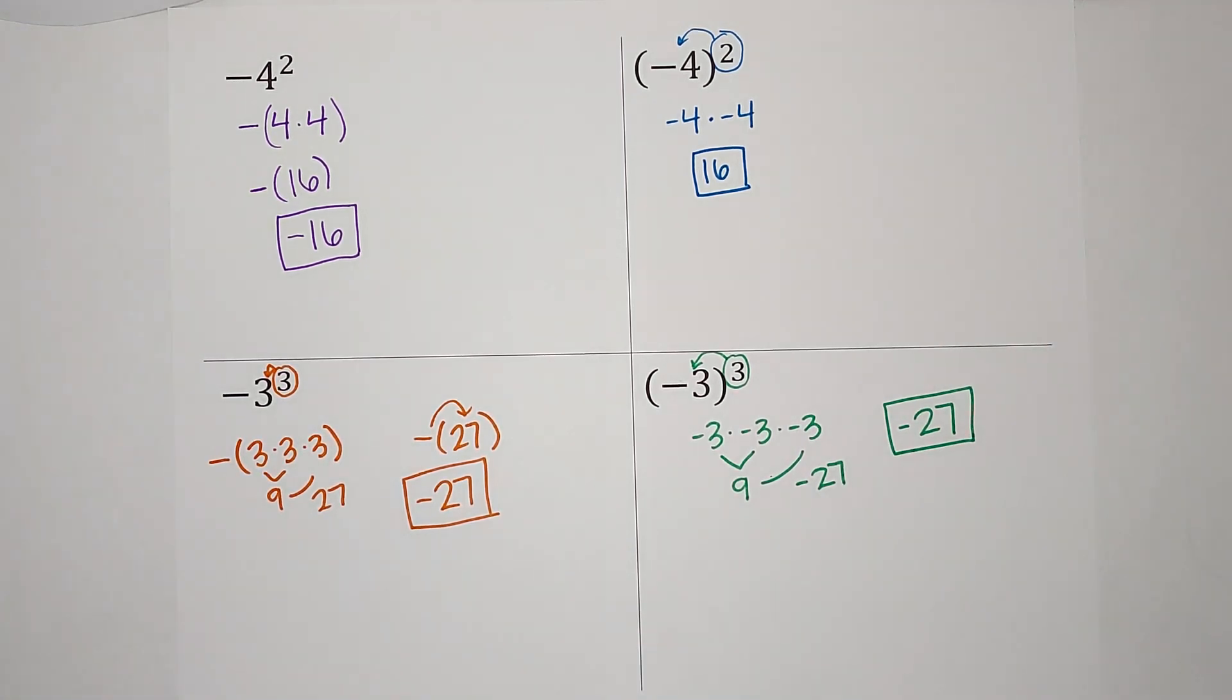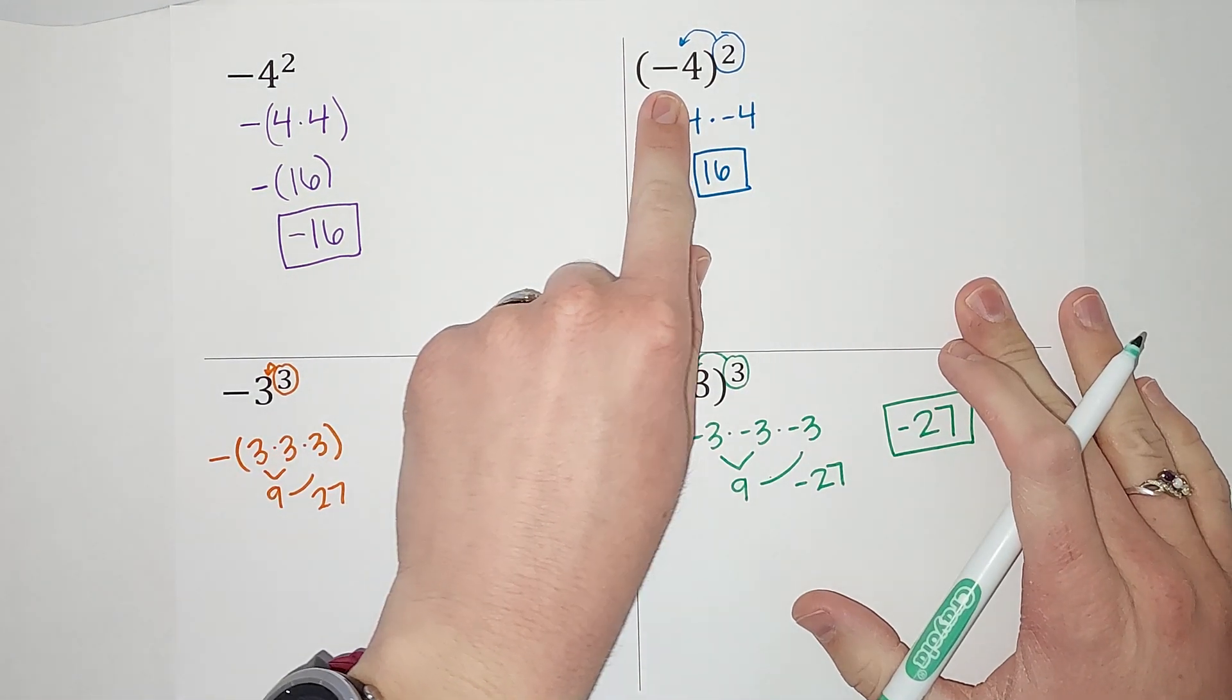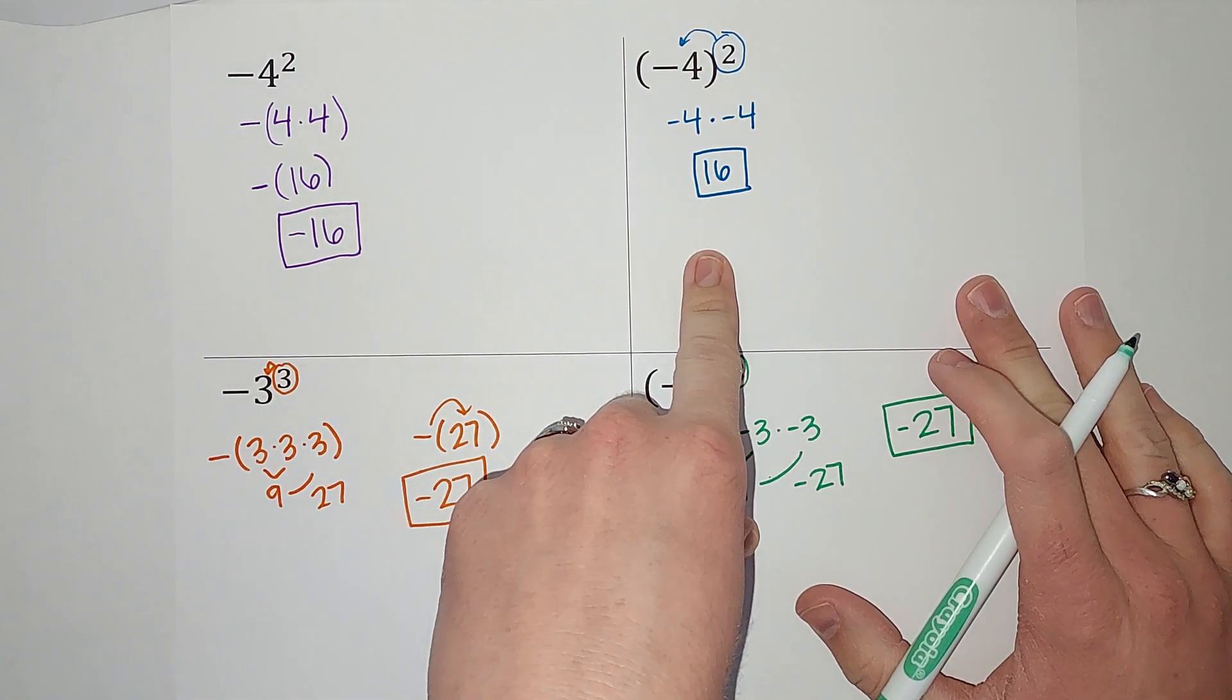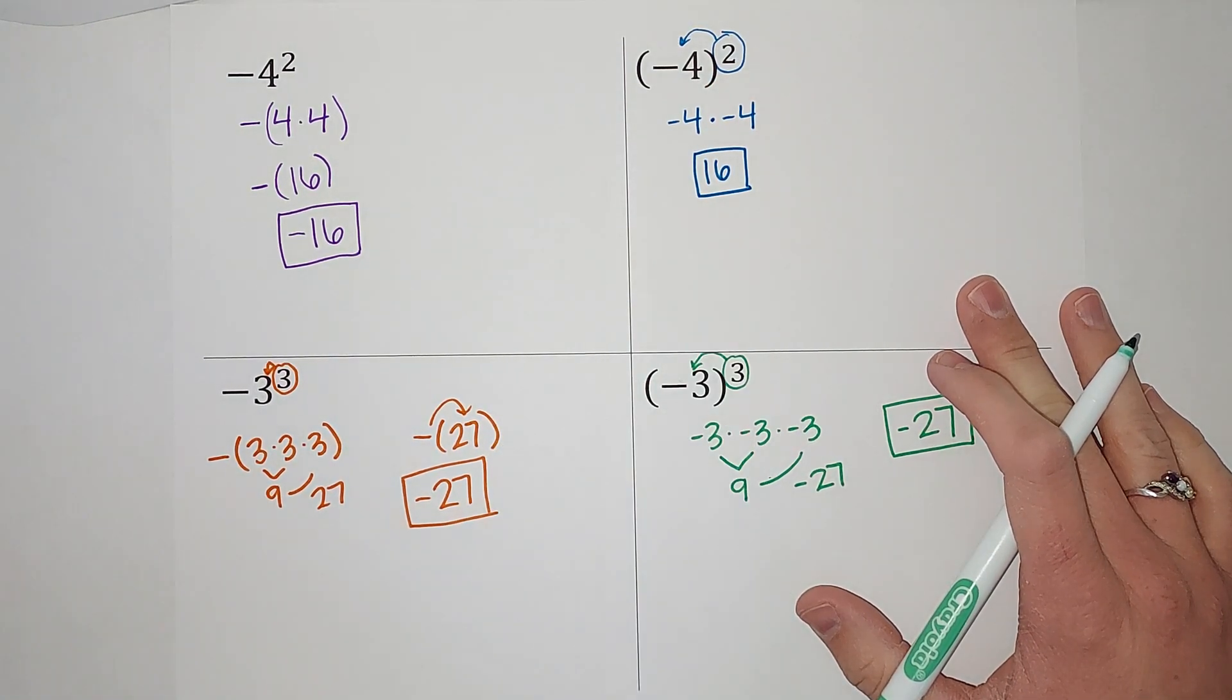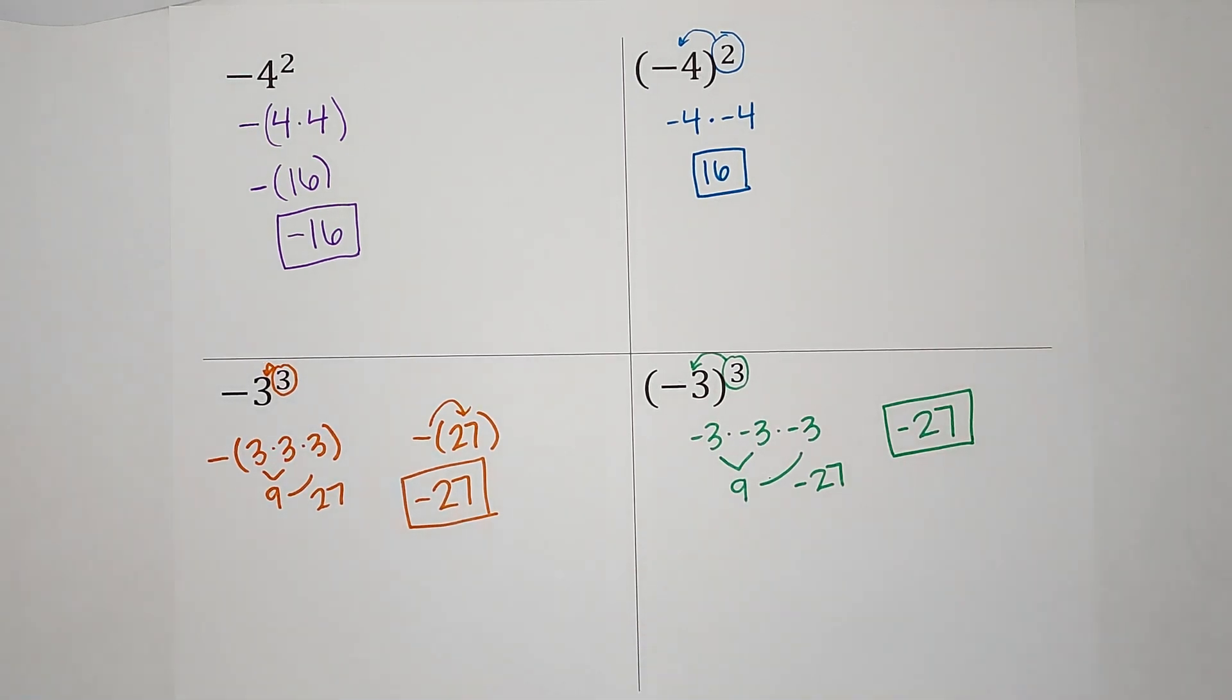So when you have exponents that apply to negative numbers, if your exponent is even, your answer is going to be positive. If your exponent is odd, your answer is going to be negative. All right, that's enough of me talking. Hopefully, that made sense. Go check out those other videos if you still need some more help with exponents. Hopefully, you can get your homework done.